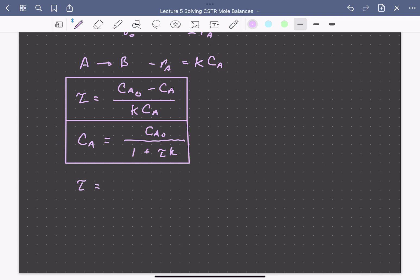Then we can write for this case the residence time tau is equal to CA0 minus CA divided by KCA squared, the rate of consumption of A.